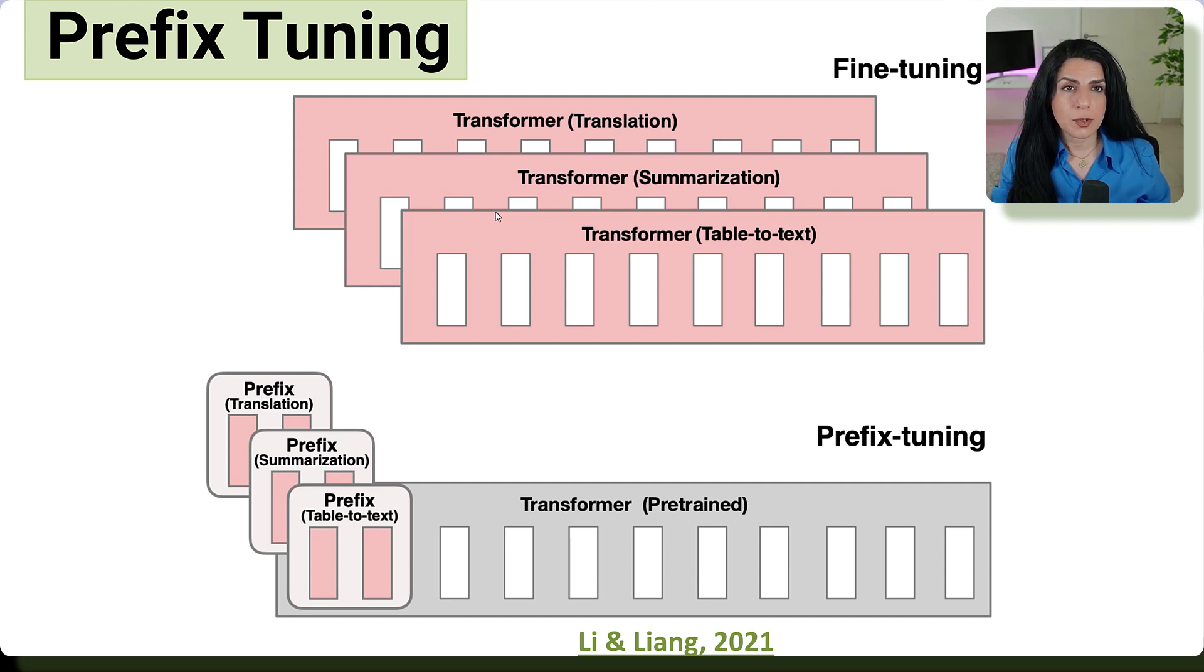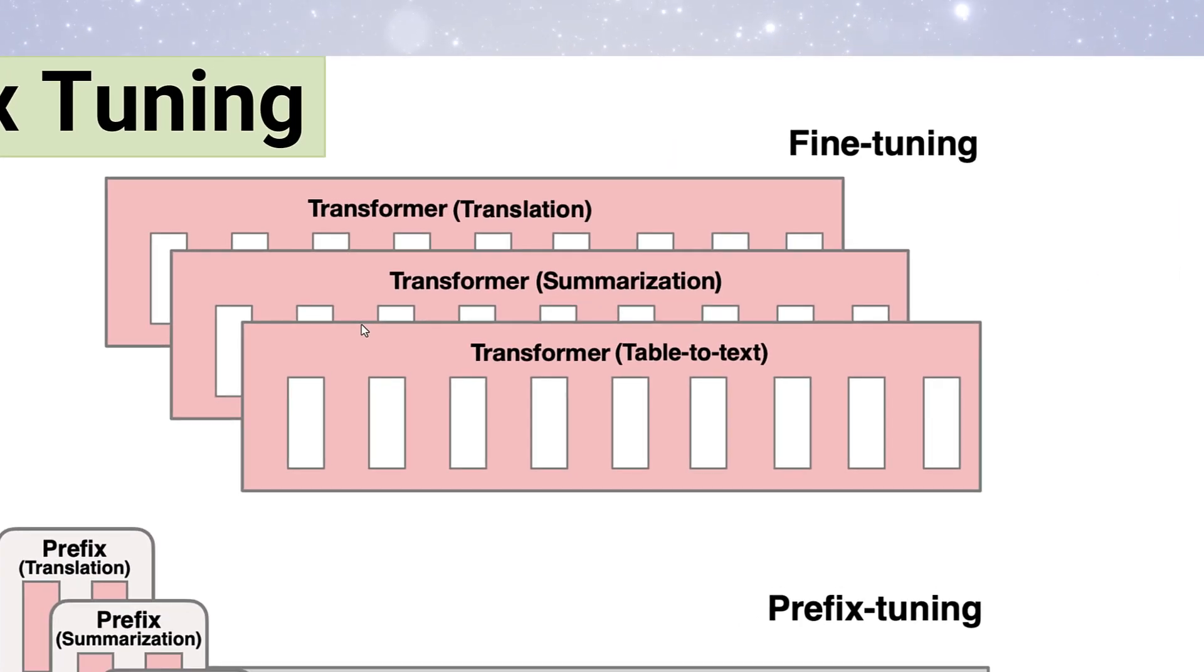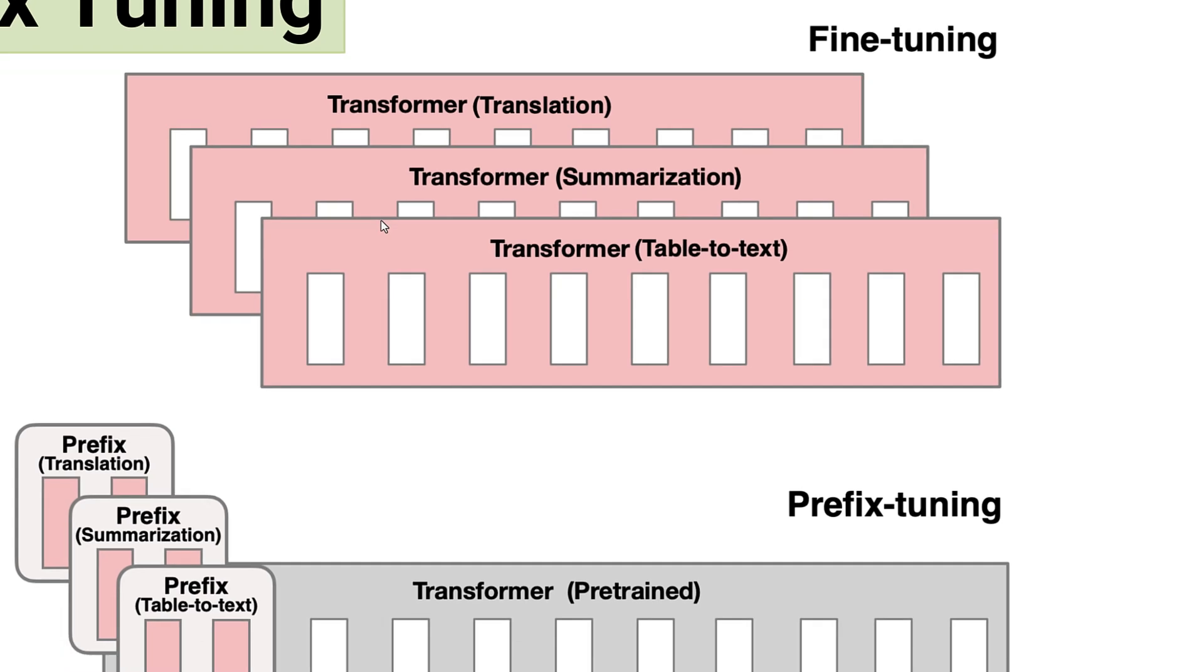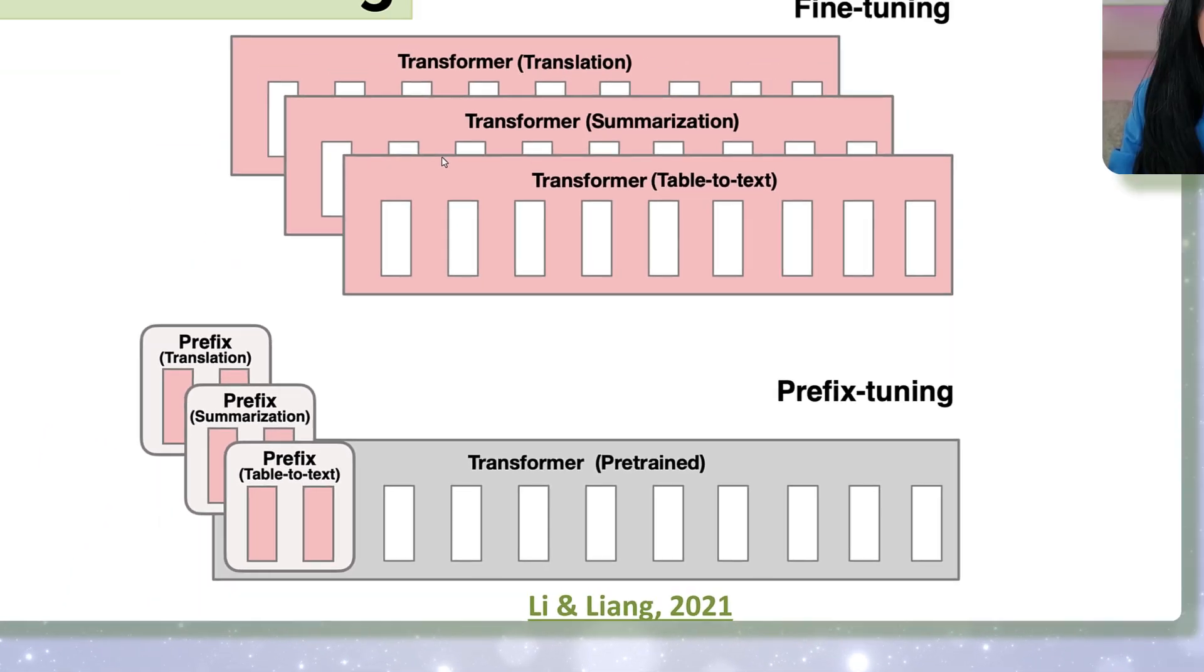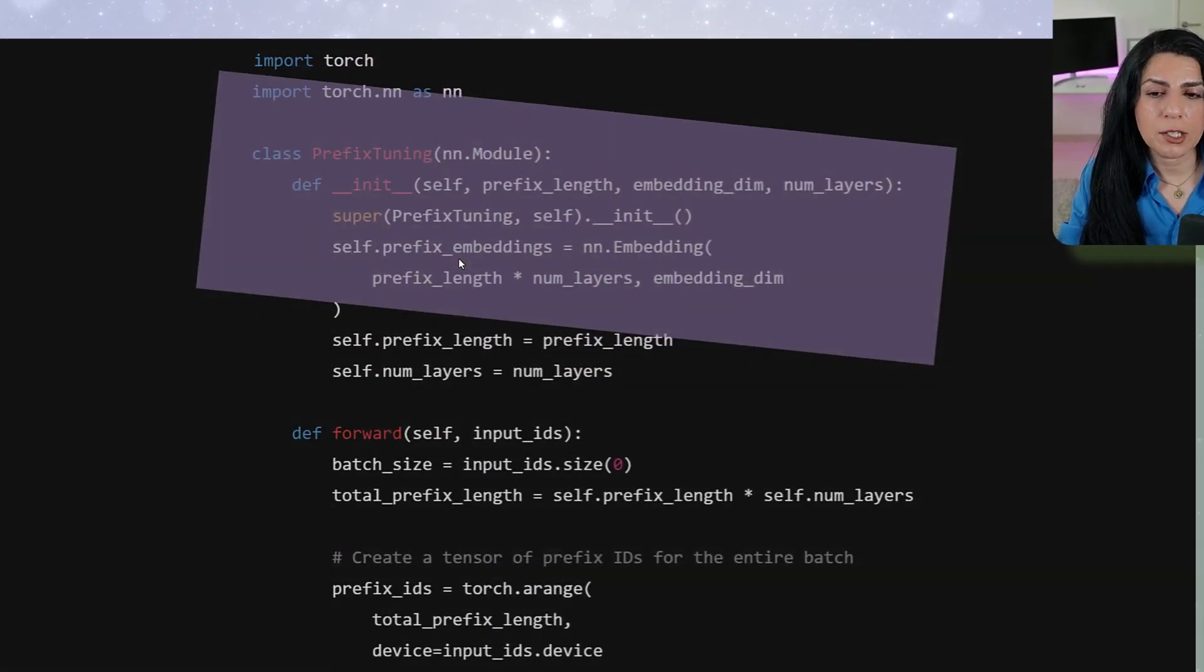That's why prefix tuning has even better results than prompt tuning. And if you compare it with fine-tuning in this picture, you can see that in fine-tuning you change the whole layers, whereas in prefix tuning you only change those embedding layers. Let's take a look at its code implementation in PyTorch.